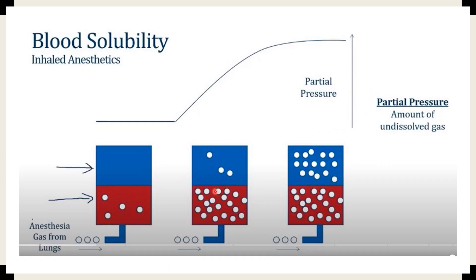To make this clear, imagine we have some blood with a little bit of space for air above it. When we begin introducing anesthetic gas molecules from the lungs, initially all the molecules will be soaked up by the blood. But if we keep administering anesthetic gas, the blood will eventually become saturated, and we will start to get undissolved molecules in the gas phase. The way we measure these undissolved gas molecules is by determining the partial pressure of the anesthetic gas. The partial pressure will only really begin to rise once the blood is fully saturated, which is why blood solubility is so important to the onset of action of gaseous anesthetics.